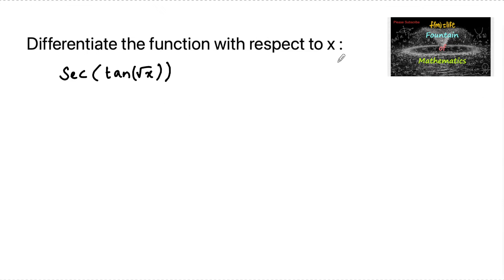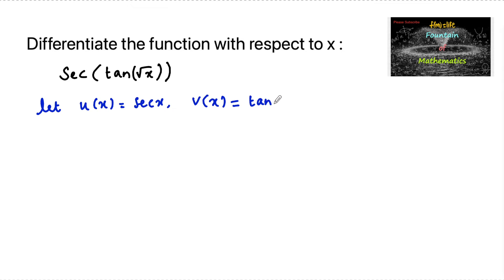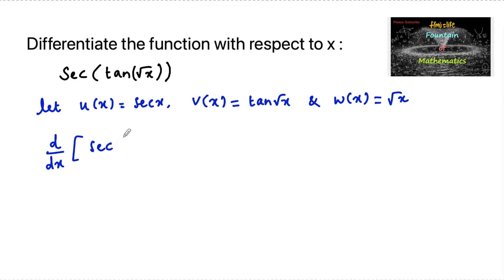Differentiate the function with respect to x: secant of tan of root x. It's a composition of three functions — secant, tan, and root x. Let u(x) = secant x, v(x) = tan(root x), and w(x) = root x. So we have d/dx of secant(tan(root x)).